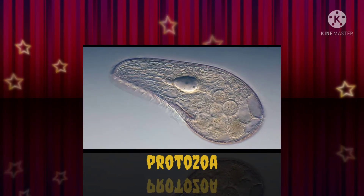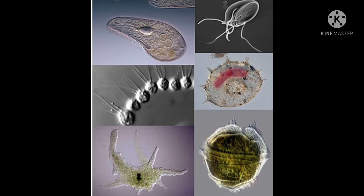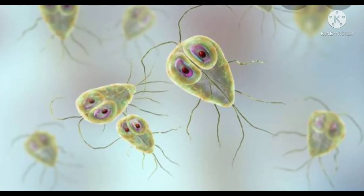Protozoa — plural protozoans — is an informal term for a group of single-celled eukaryotes, either free-living or parasitic, that feed on organic matter such as microorganisms or other organic tissues and debris. Historically, protozoans were regarded as one-celled animals because they often possess animal-like behaviors such as motility and predation, and lack a cell wall as found in plants and many algae.